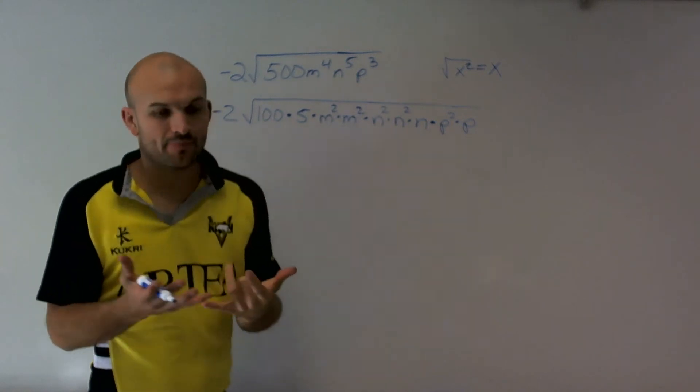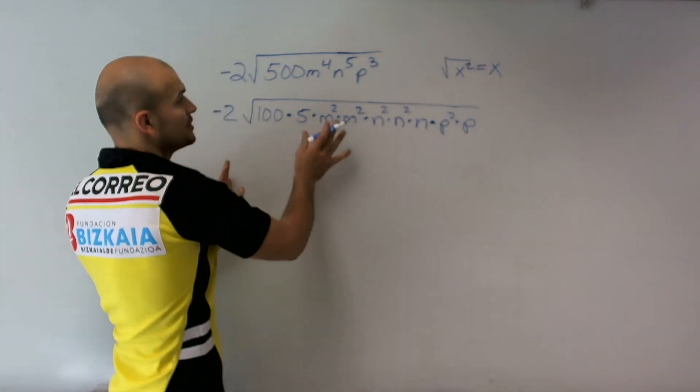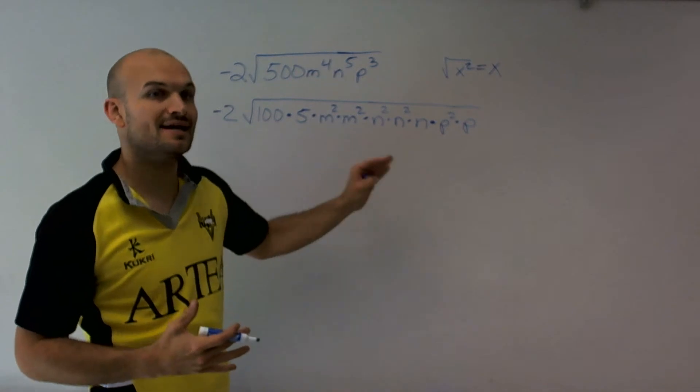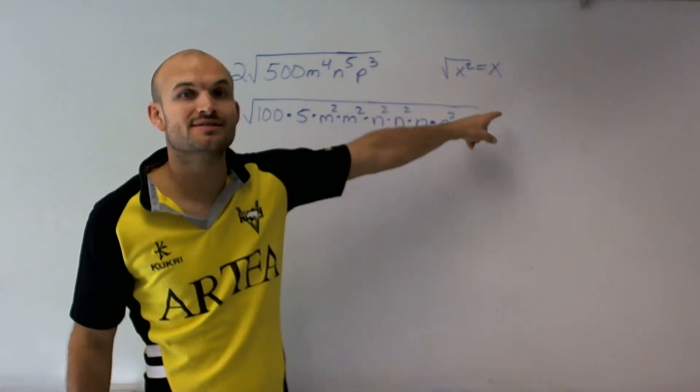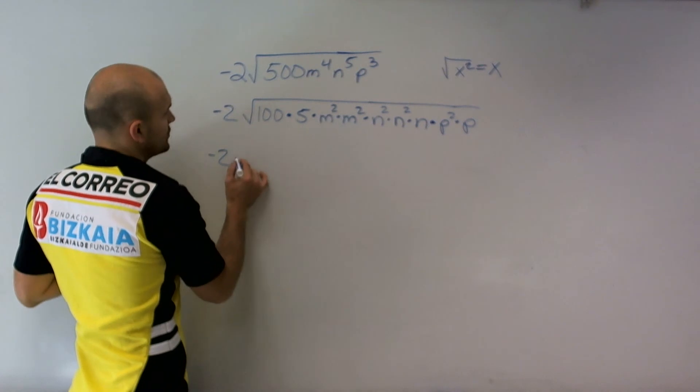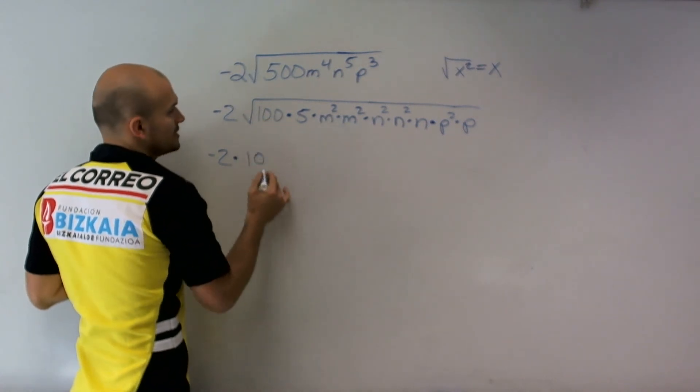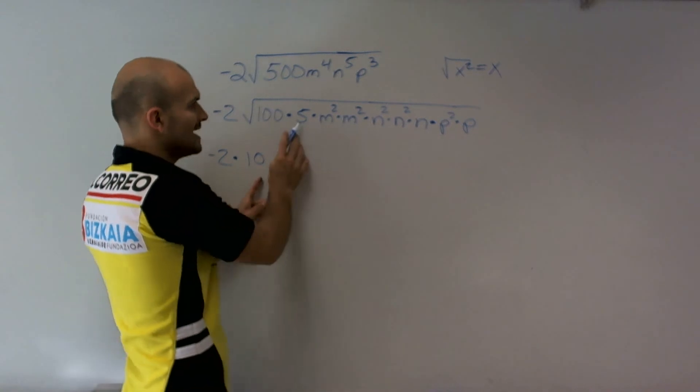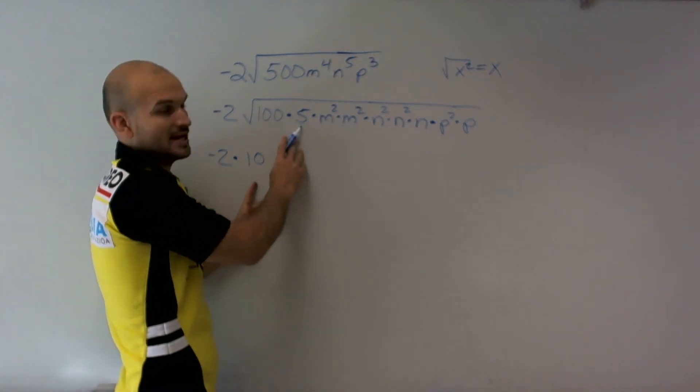So now by applying this, I've rewritten this out. These are equivalent. Now what I can do is I can take the square root of each one of these numbers and simplify it. So here I have negative 2 times the square root of 100, which is just 10. I can't take the square root of 5, so that's going to remain under the radical.